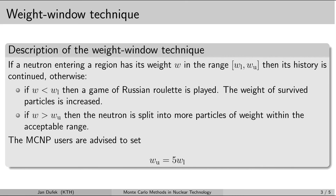The MCNP manual recommends that you set the upper limit of the weight window to be 5 times the lower limit. That is all for now — have a nice day.